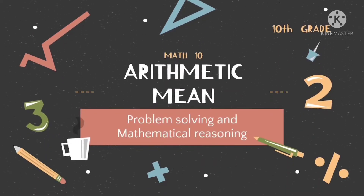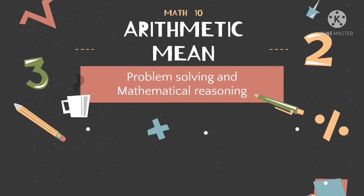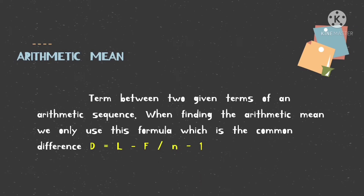Next, arithmetic mean. The word 'mean' in math refers to the term between two given terms of an arithmetic sequence. For example, in 5, 6, 7, the mean is 6. In 7, 6, 5, 4, the means are 6 and 5. When finding the arithmetic mean, we use only this formula: d equals L minus F divided by N minus 1.